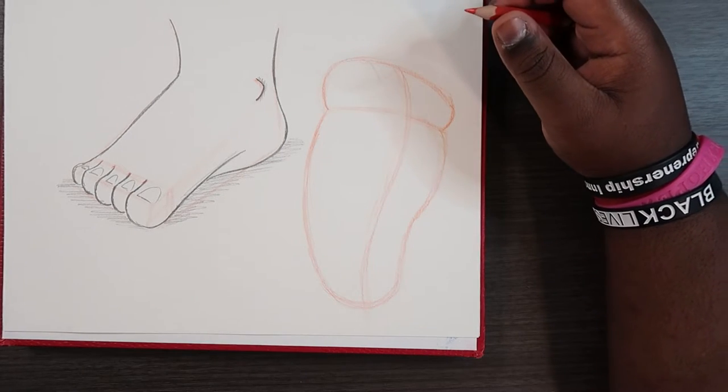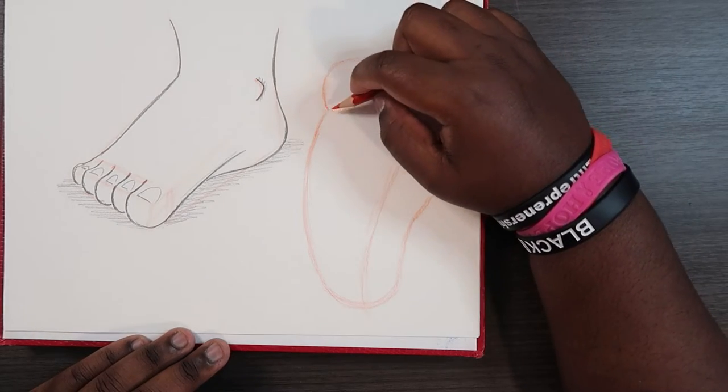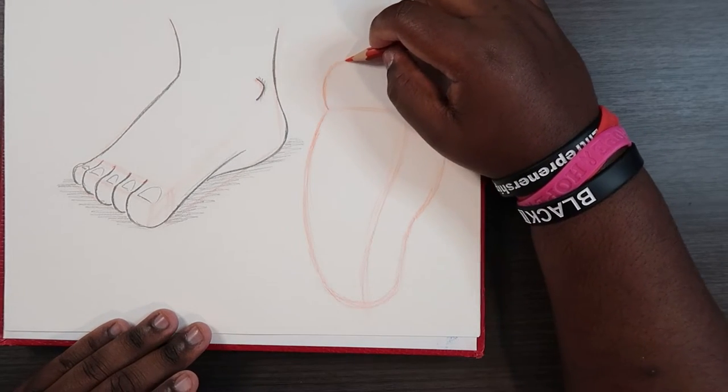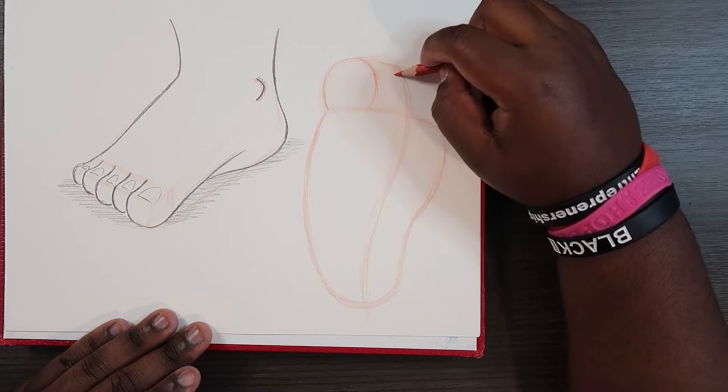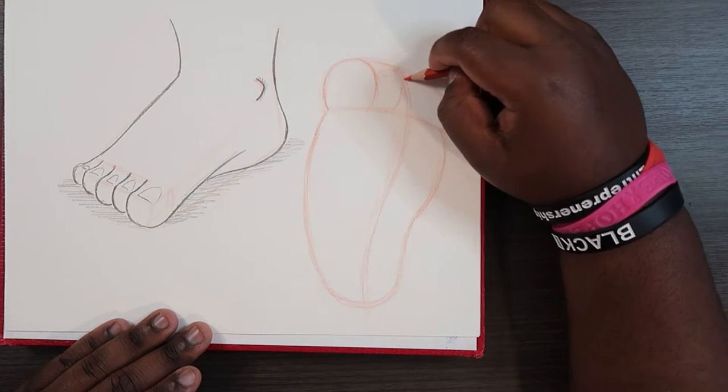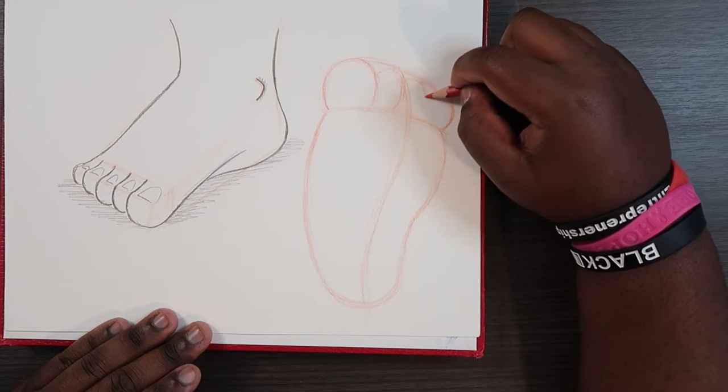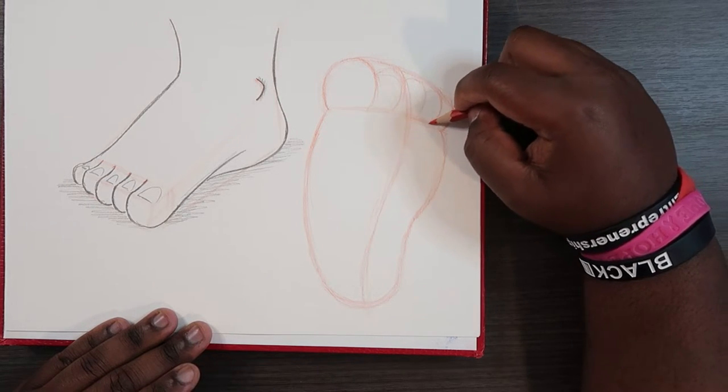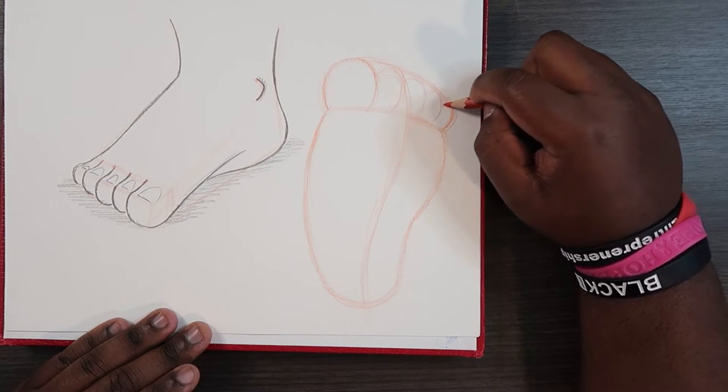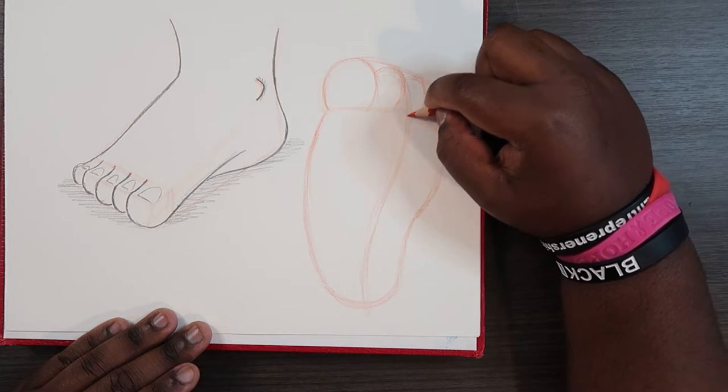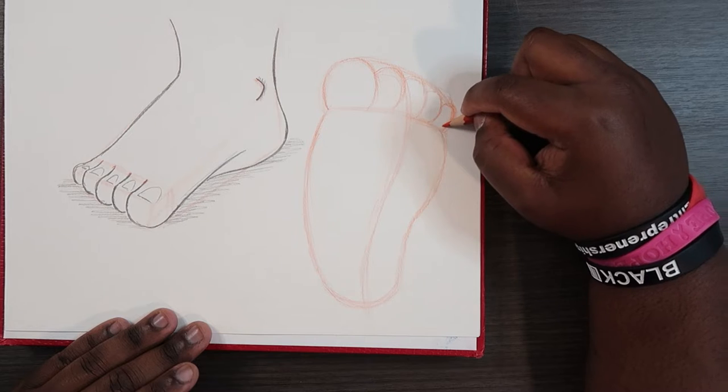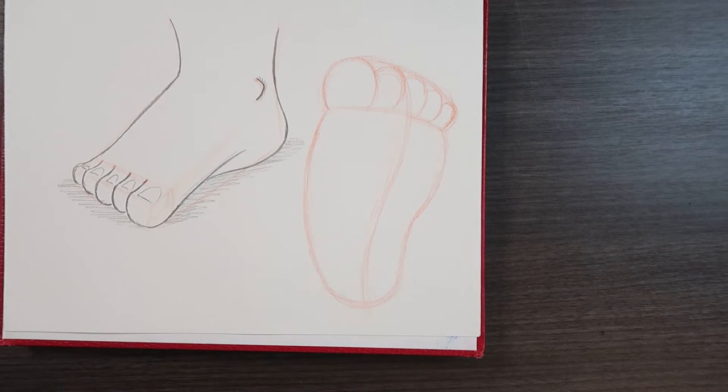I'm gonna divide that into five pieces. So we're pretty much gonna draw the toes, but we can provide details to them later. Here's the big toe, here's the second biggest toe, the third one, the fourth and the fifth. And keep in mind they're also gonna decrease in size, so they're gonna gradually get smaller. Okay, so those are our guidelines.